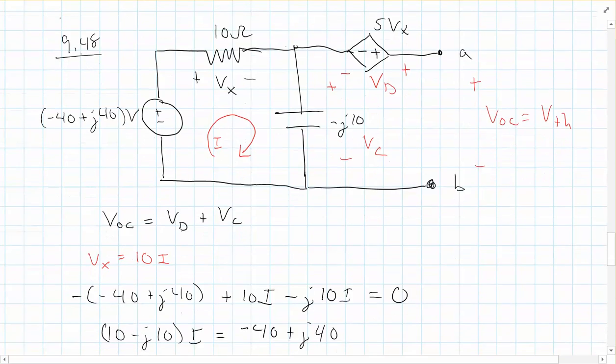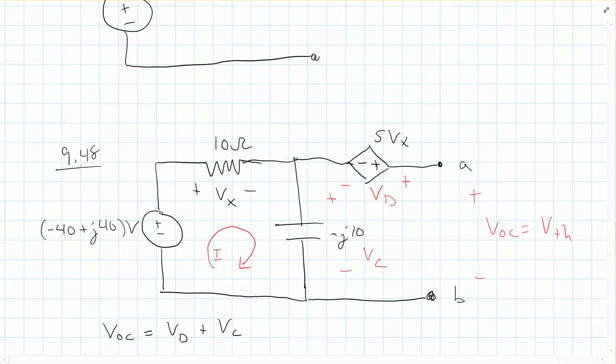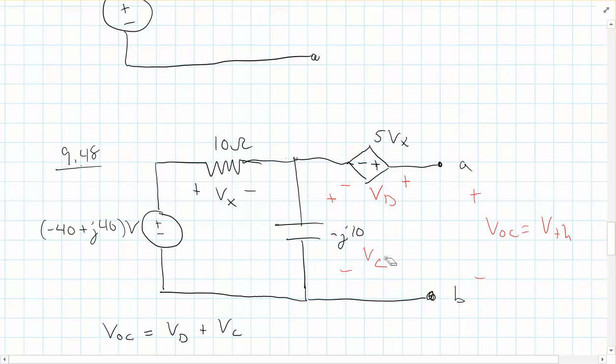For this example problem, I actually have it all written out. I was recording the video once and I made a mistake and I was doing something stupid in my calculator, so instead of having to rewrite everything out, I'm going to keep it as is and we'll go through and look at all of the stuff here. So I will erase a couple things and kind of start over. So we're given this problem, we're asked to find the Norton equivalent.